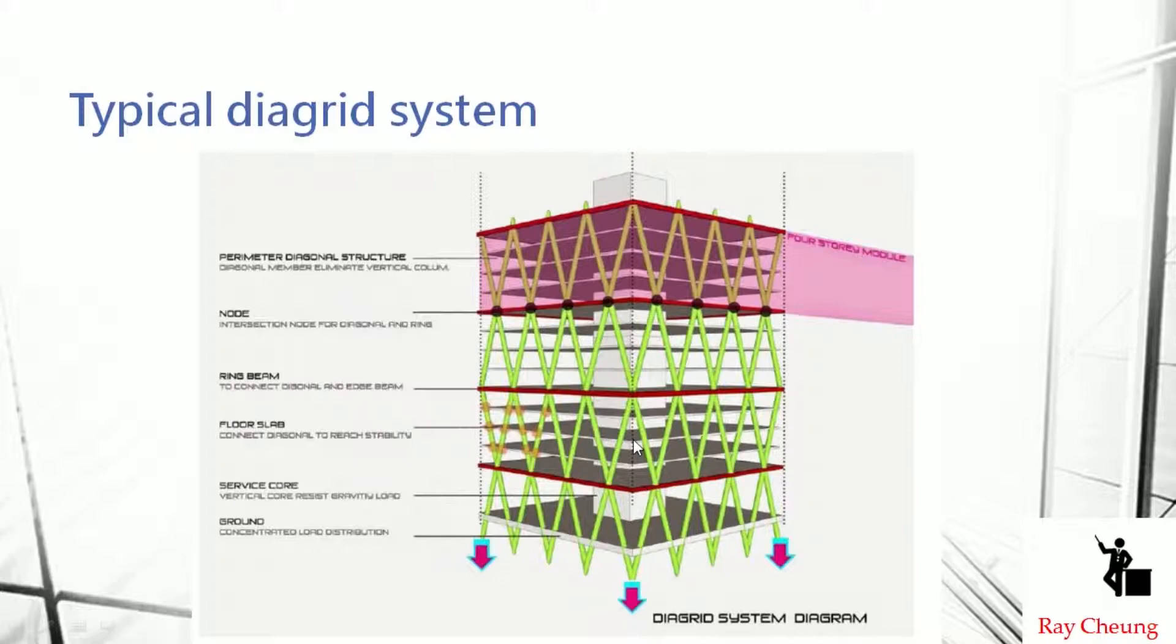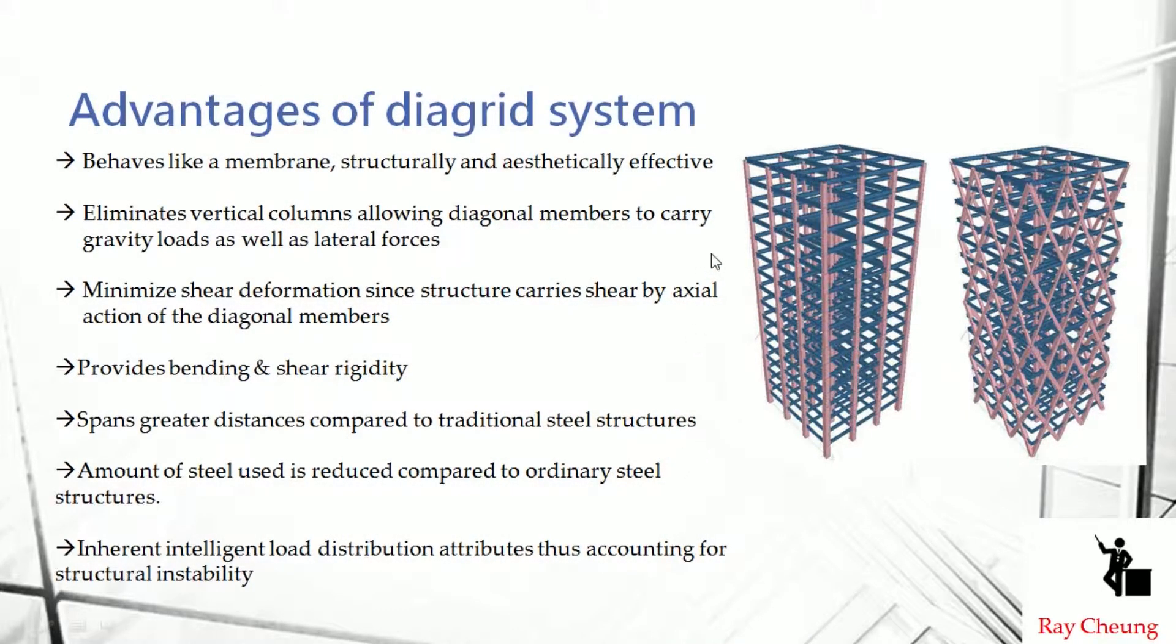This is a typical form of the diagrid structures. Actually, what I'm saying before is the diagrid system is how to reduce the loading of the columns. For example, if you see typical buildings they have vertical columns. But once you provide the diagrid, you need to take out the vertical columns, otherwise they will be duplicate. Actually diagrid is one form of the column system. If you provide the diagrid, try to take out the vertical columns. If you combine together, I personally think it may not be a good option.